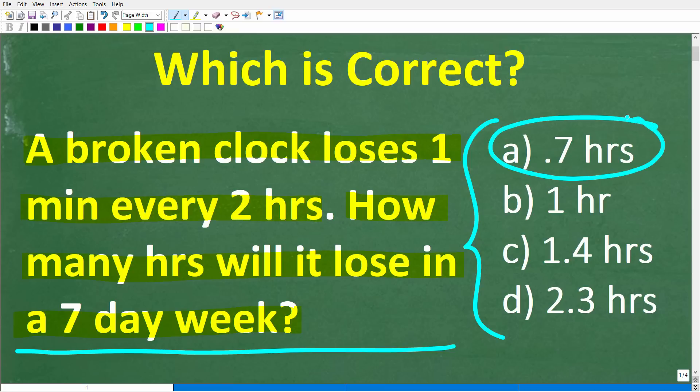So A is 0.7 hours, B is 1 hour, C is 1.4 hours, and D is 2.3 hours. Now, if you have the answer, go ahead and put that into the comment section. I'll show you the correct answer in just one second. Then I'm going to solve this problem step by step.